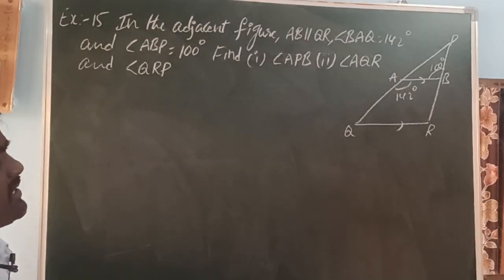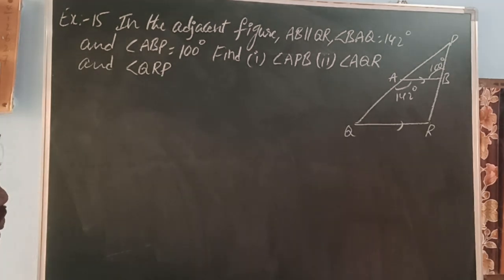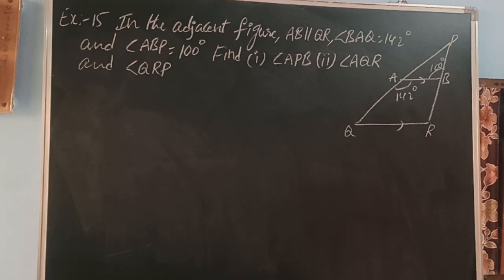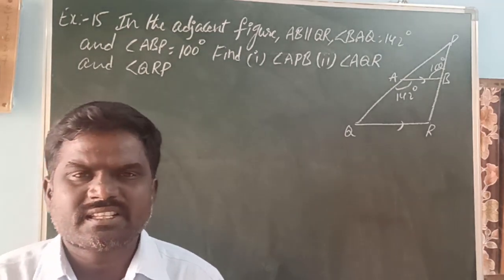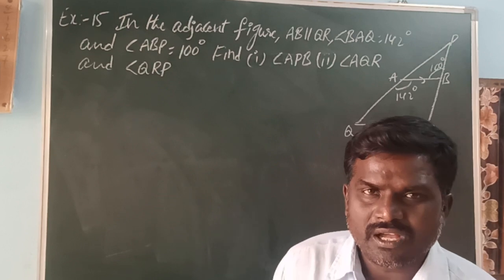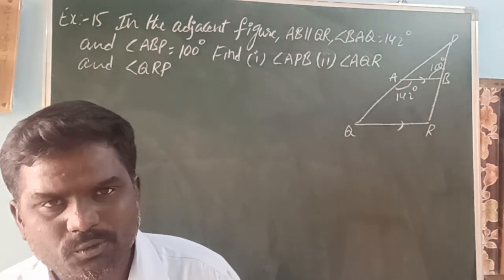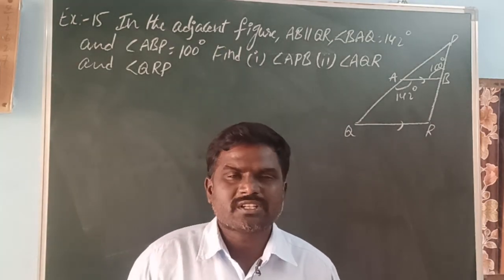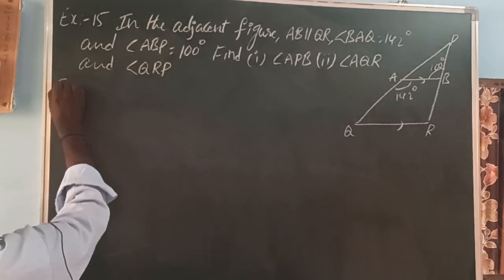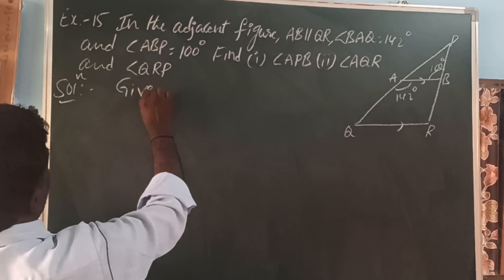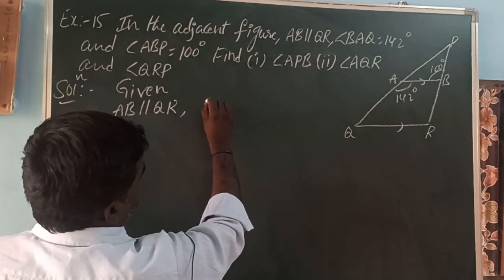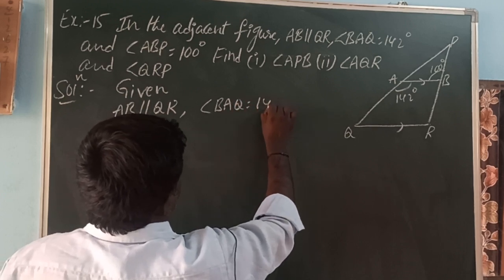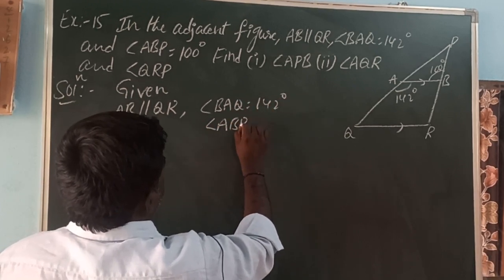Next, example 15. In the adjacent figure, AB is parallel to QR. Angle BAQ is 142 degrees, angle ABP is equal to 100 degrees. Find angle APB, angle AQR, and angle QRP. When any two lines are parallel, the conditions are: corresponding angles are equal, vertically opposite angles are equal, alternate interior angles are equal, alternate exterior angles are equal, sum of co-interior angles is 180 degrees, and sum of co-exterior angles is 180 degrees. Here, given AB parallel QR, angle BAQ is 142 degrees and angle ABP is 100 degrees.